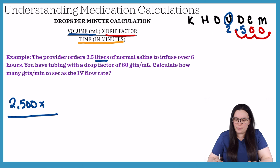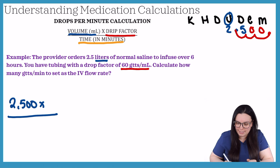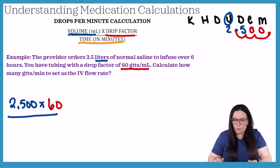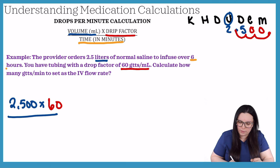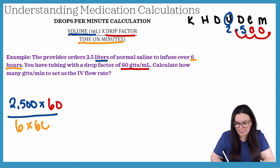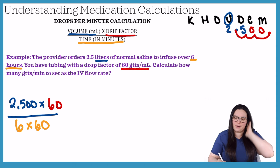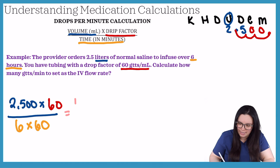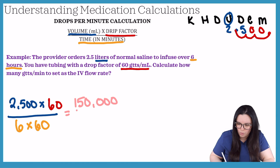Now we figure out our drip factor — we know it's 60, so we plug that in. Lastly, we need our time in minutes: the infusion runs over 6 hours, so we multiply 6 by 60 because there are 60 minutes in an hour. Doing our multiplication, we get 150,000 over 360.